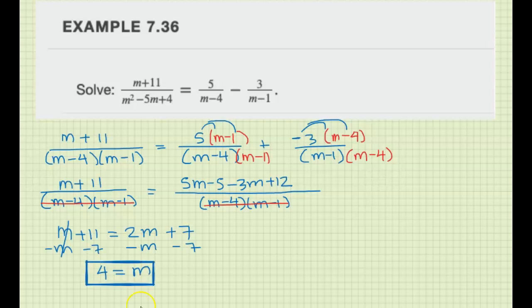But you're not done. You've got to go back to the beginning, like here after you factored it, and find the excluded values.